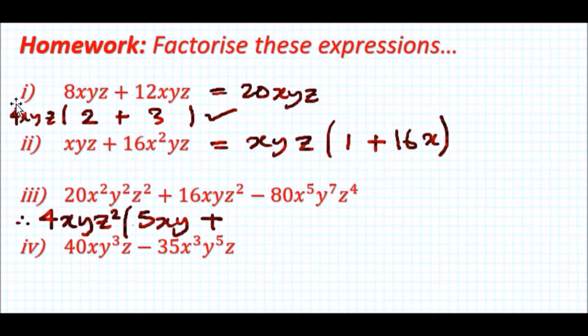To reproduce the second term we need to get 16xyz². Multiply the original by four and you have everything else. And lastly to get the final term 80, how many fours go into 80? Twenty. To get x⁵ you need four more x's, to get y⁷ you need six more y's, and to get z⁴ you need two more so z squared.